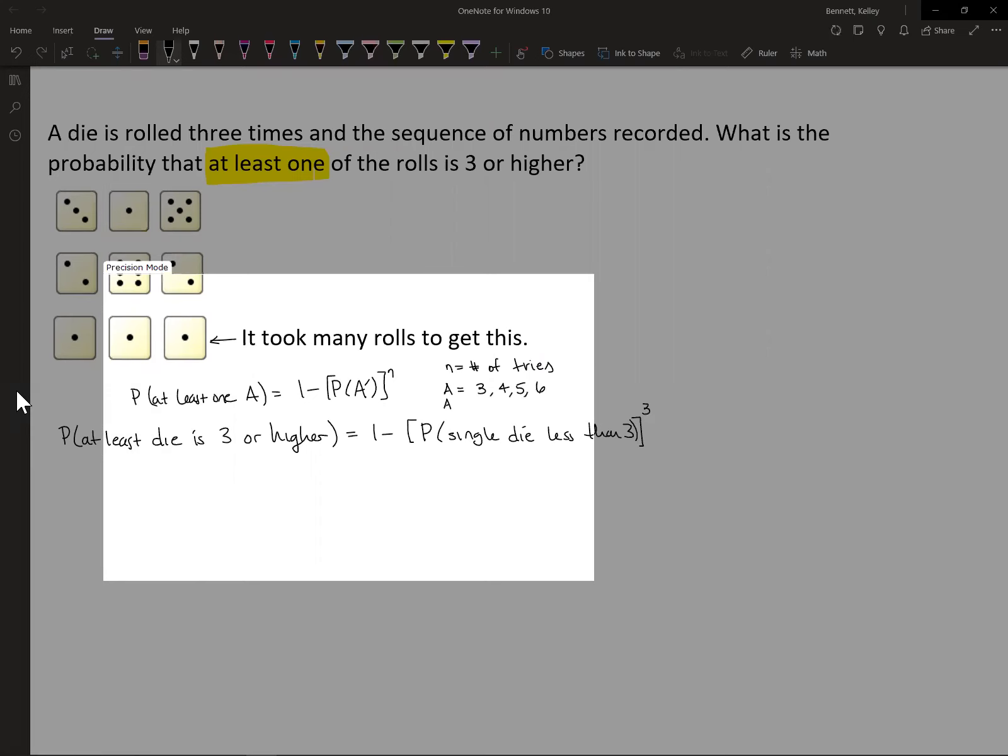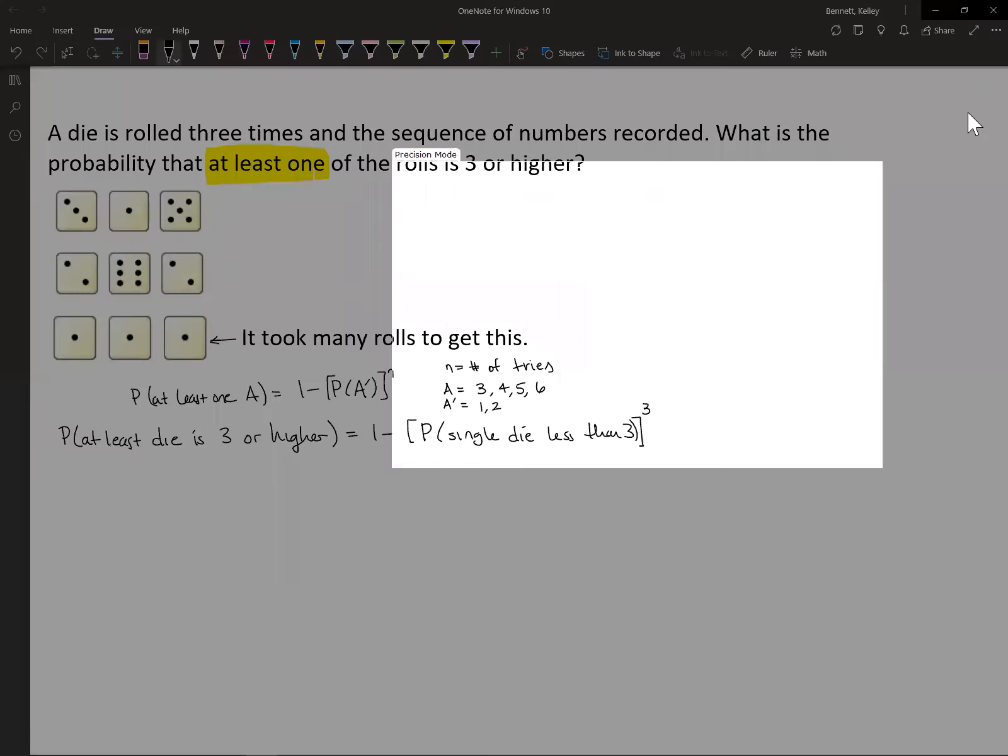And then A complement is going to be less than three, so that's just one or two. When you're looking at the faces of a single die, you have one, you could get a two, you could get a three, a four, a five, or a six. So for us, three or higher is three, four, five, six—this is event A.